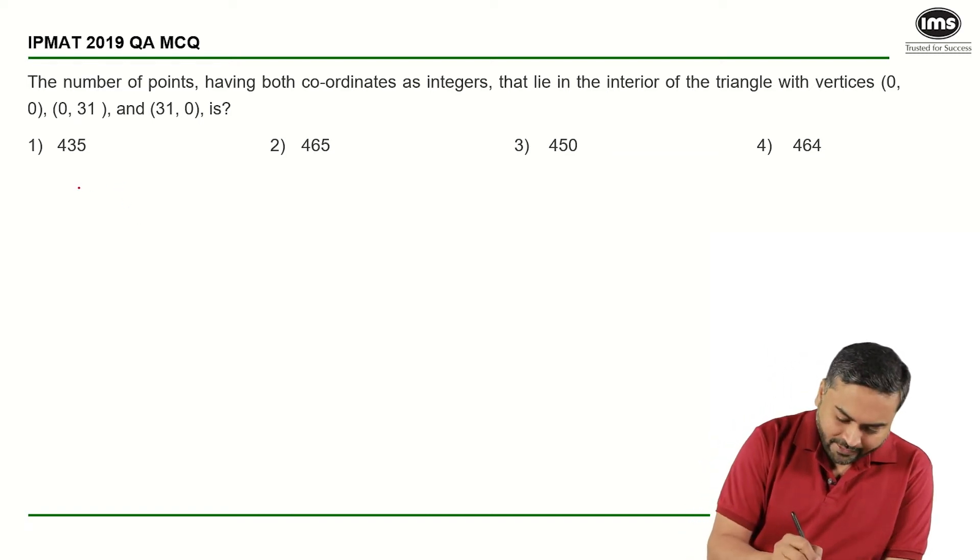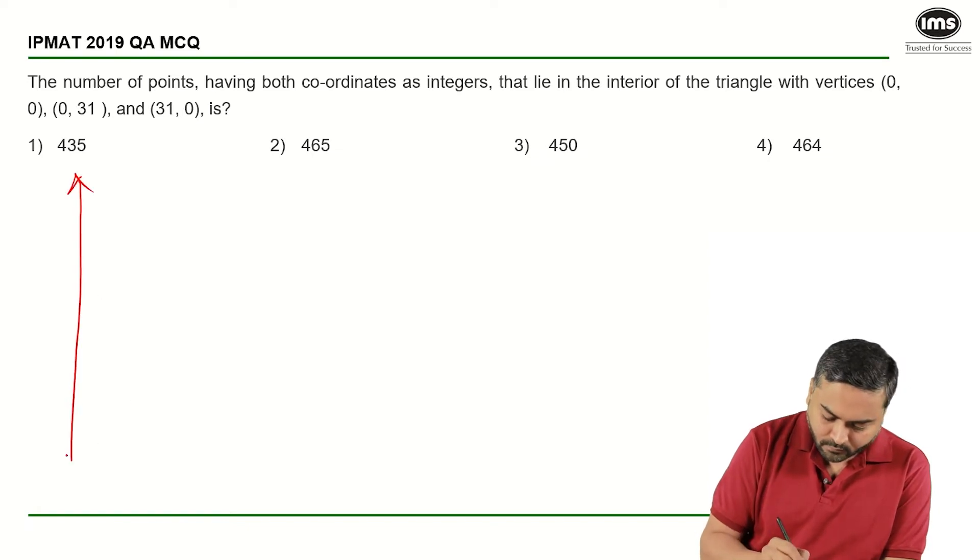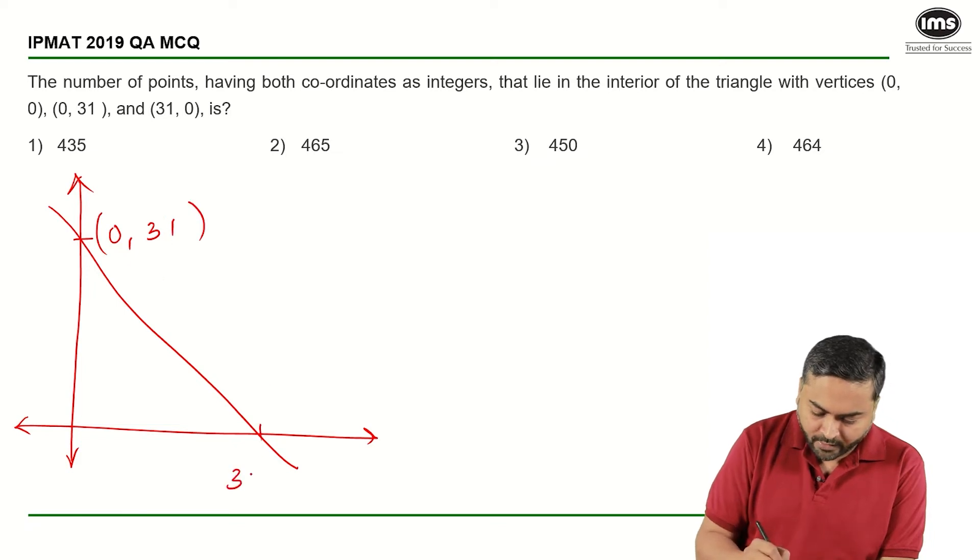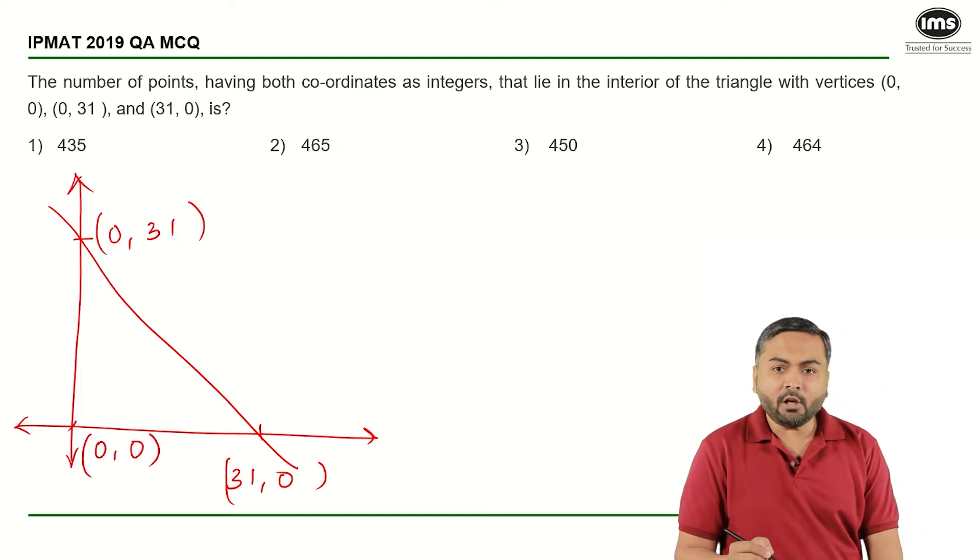Let us draw that first. So this will be (0,31), this will be (31,0), and this will be (0,0). I need to find out the points that lie in the interior of the triangle and not on the circumference.